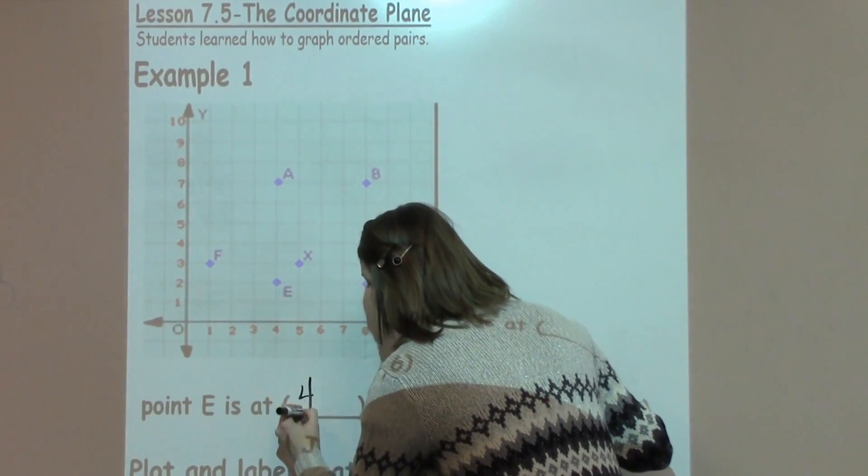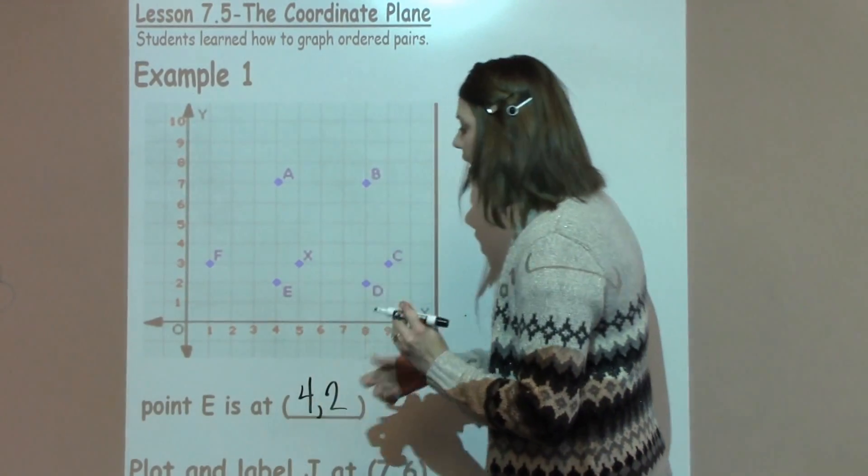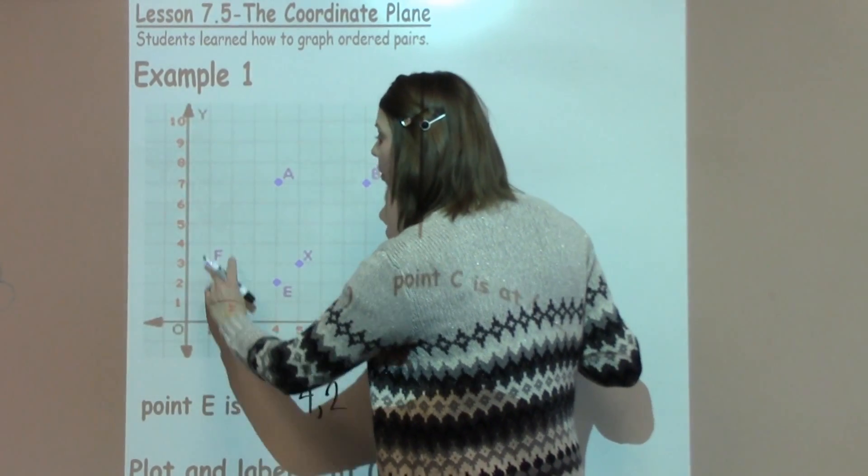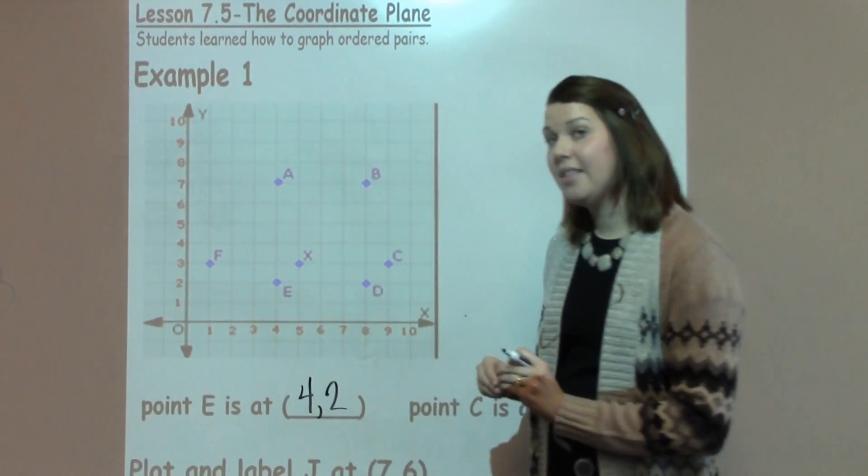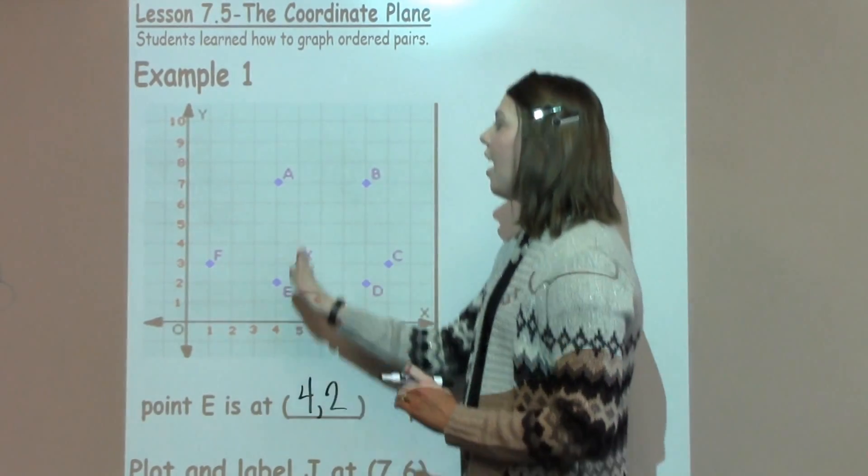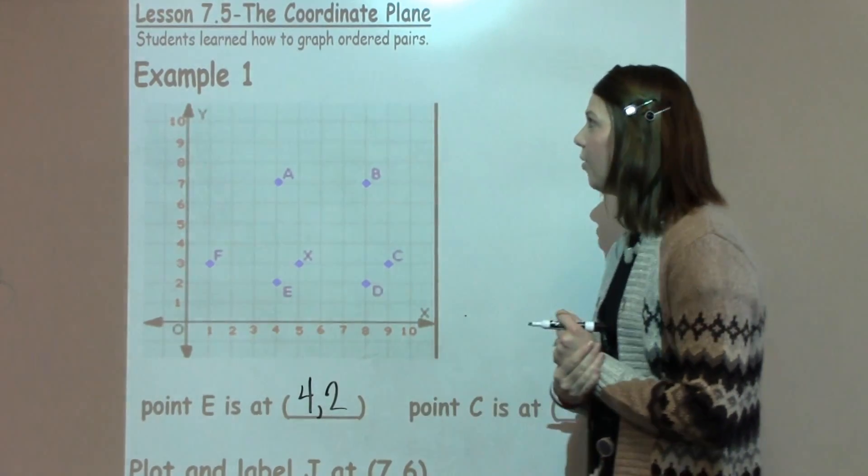So I'm going to go ahead and write down 4, 2 with a comma. Now a really common mistake for fifth graders is to say this is at 2, 4. Notice there is nothing there. It's really important to always go over and then up when you're working with ordered pairs.